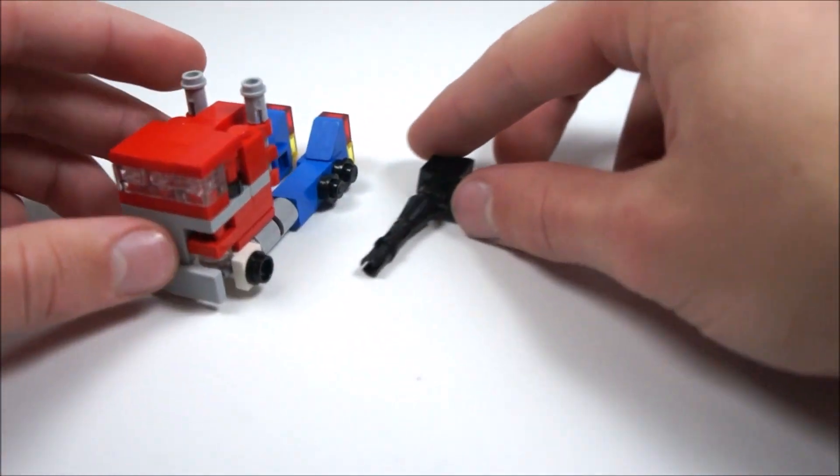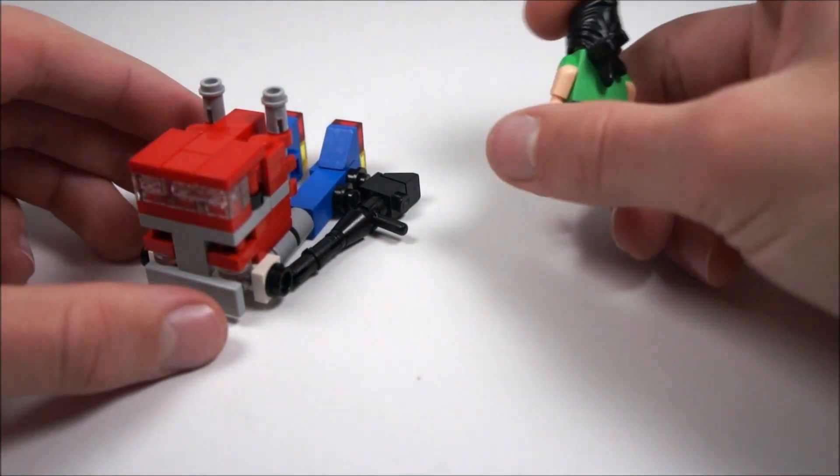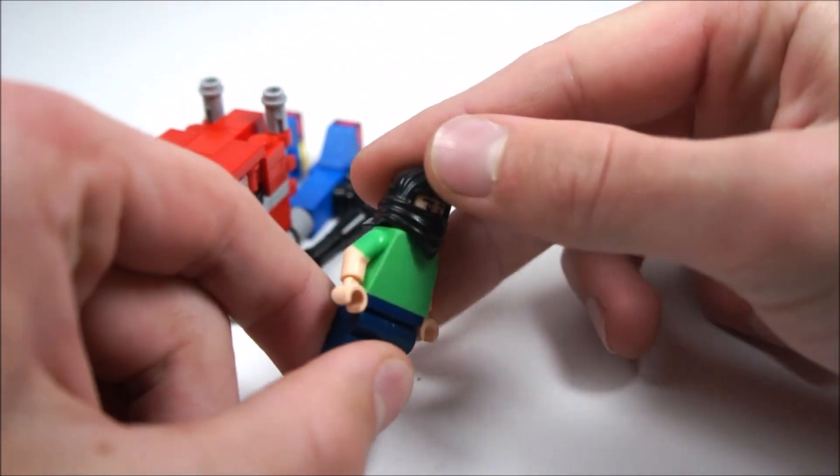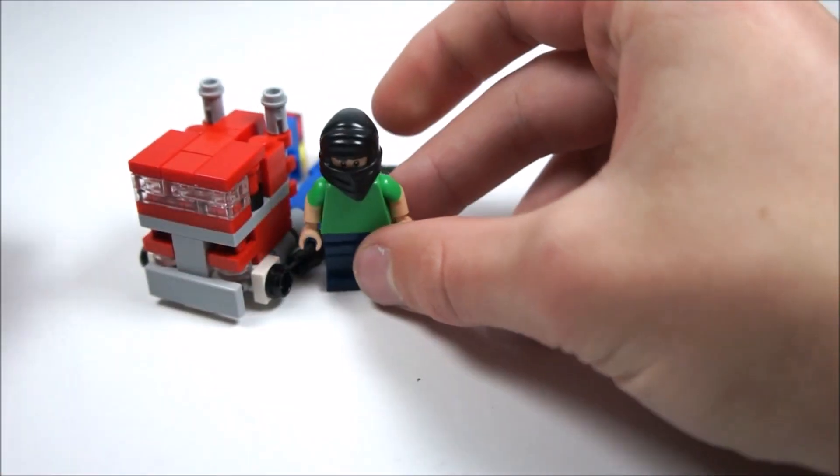Here he is compared to the new StupidNinja minifigure, using the double arm mold.